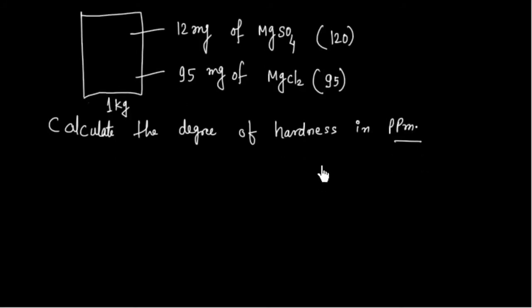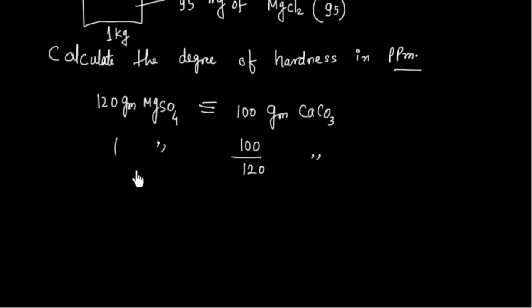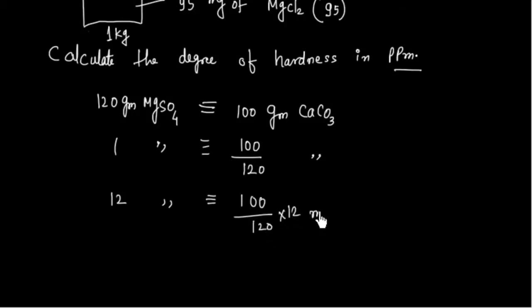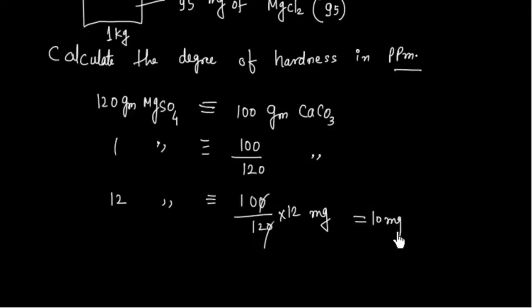First, convert MgSO₄ to CaCO₃ equivalent. Since 120 g of MgSO₄ is equivalent to 100 g of CaCO₃, then 12 mg of MgSO₄ is equivalent to (100/120) × 12 = 10 mg of CaCO₃.